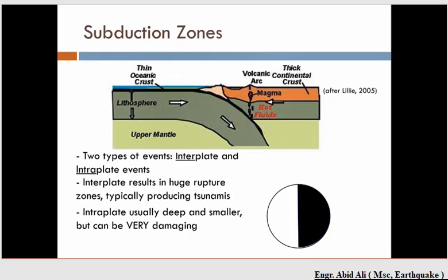A rupture on an interplate event is what we refer to as a mega-thrust earthquake. These are the big ones — magnitude 8.8, 8.5, 9.0, 9.5 events. They are massive. That oceanic crust is getting shoved and pushed deep down beneath the continental crust.